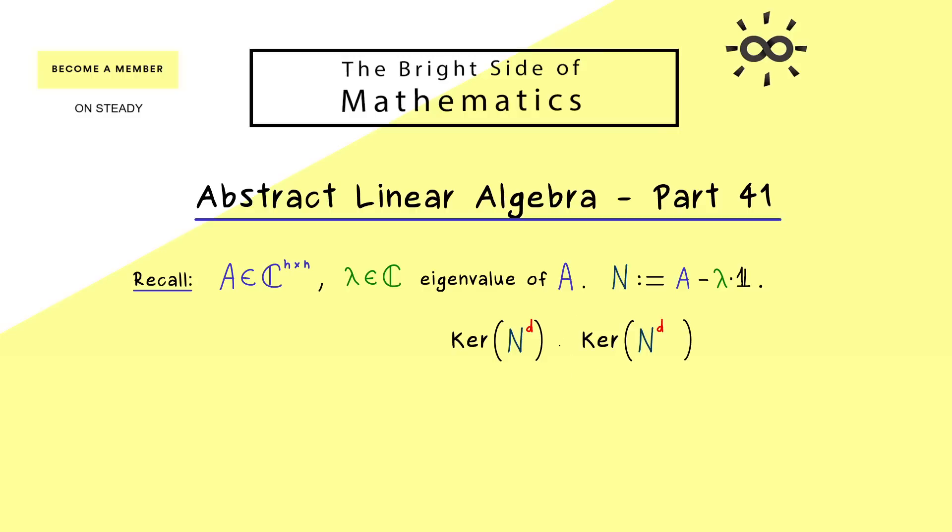However, it turns out that there is a minimal index d such that the kernel does not increase any more. And exactly this number d is what we call the fitting index. And moreover, this fitting index also holds for the range of the matrix N to the power d.